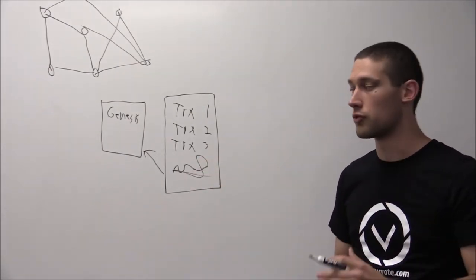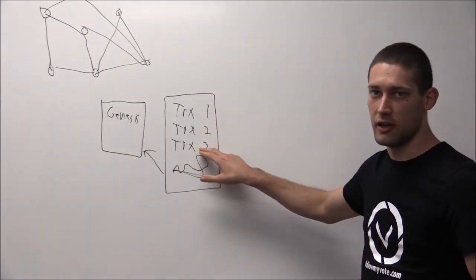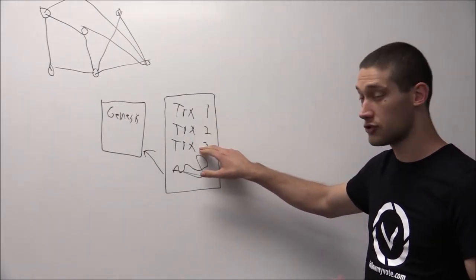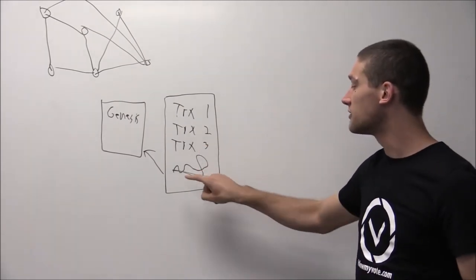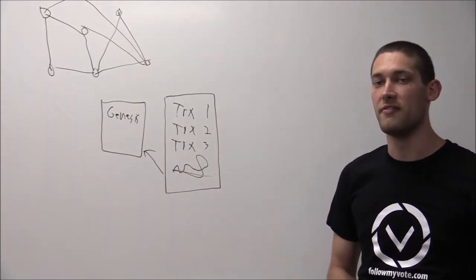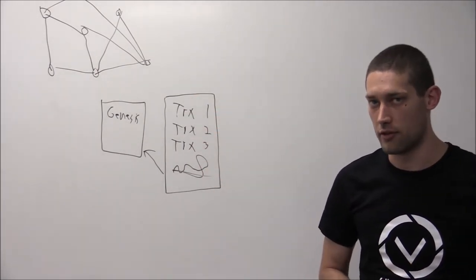The second important property is that if any of this information in this transaction history within the block were to change, then this signature would no longer be valid and every node in the network would be able to see that this block had been tampered with.